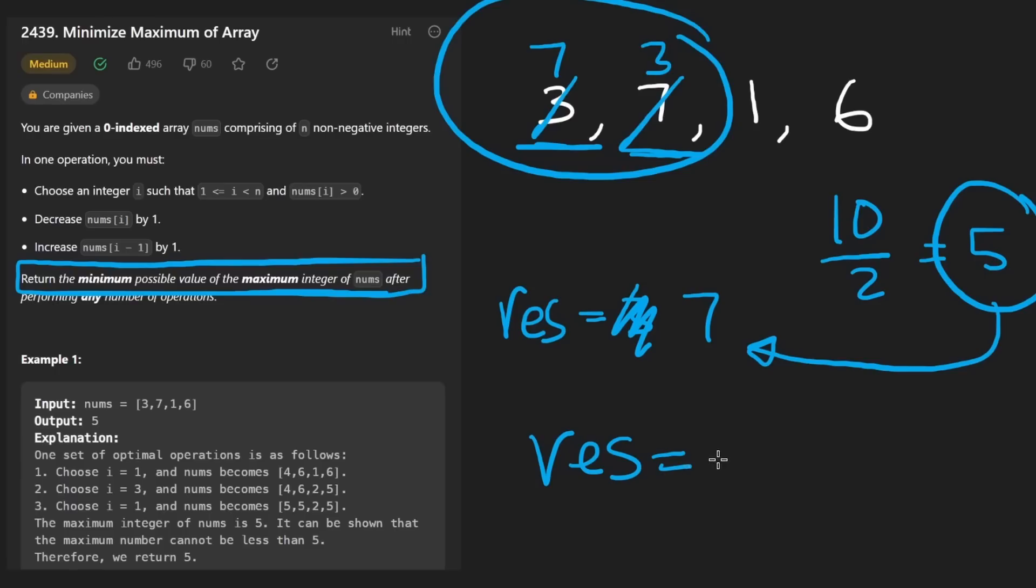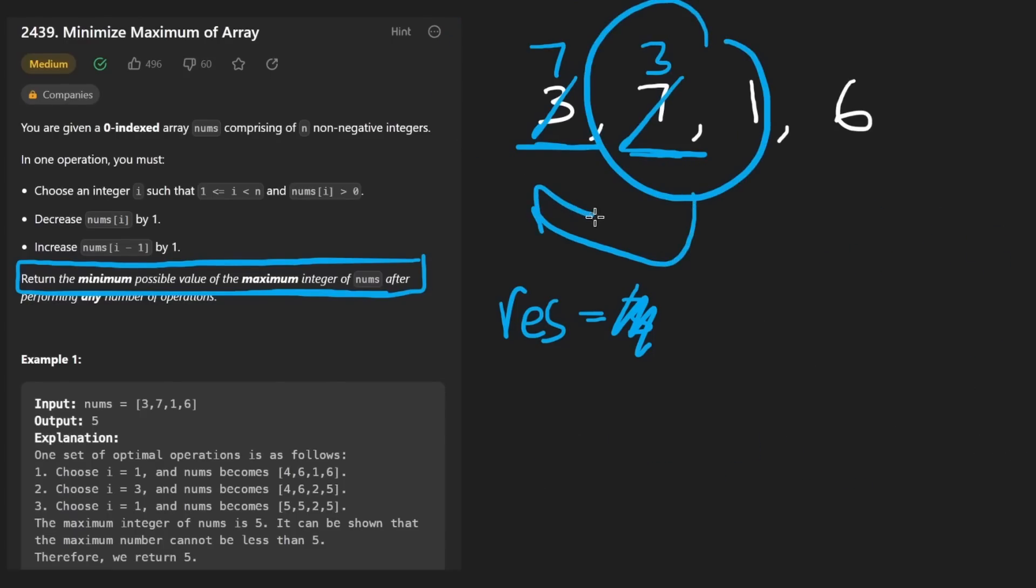So in other words, we're always going to say result is equal to the maximum of itself and whatever this value is that we computed, which in this case is five. The reason is because, as we mentioned earlier, we can move values to the left, but we can't move values to the right.